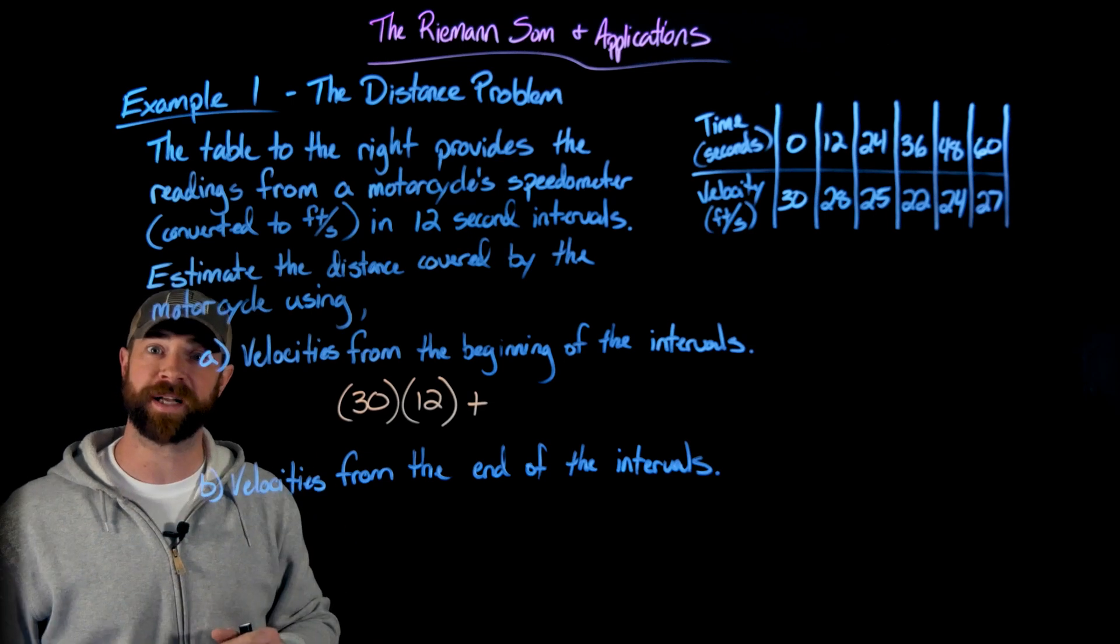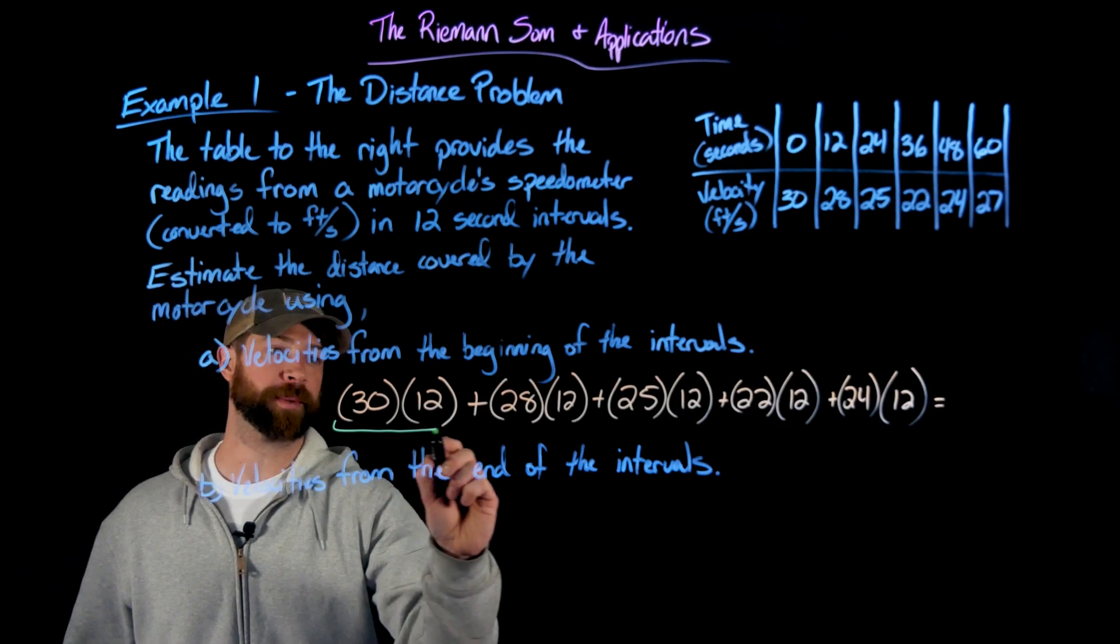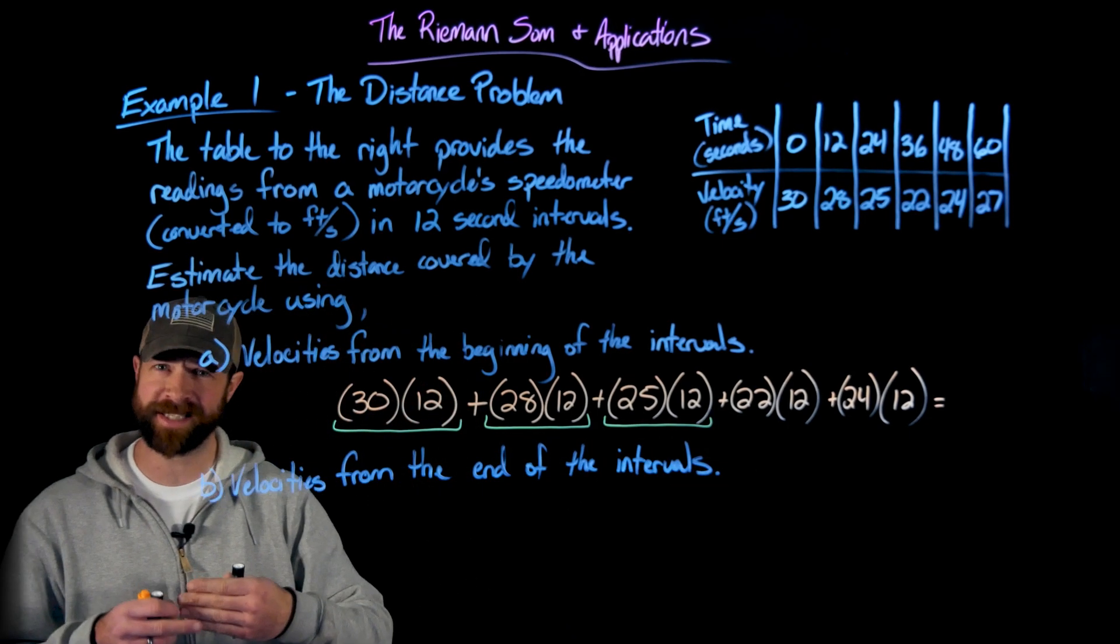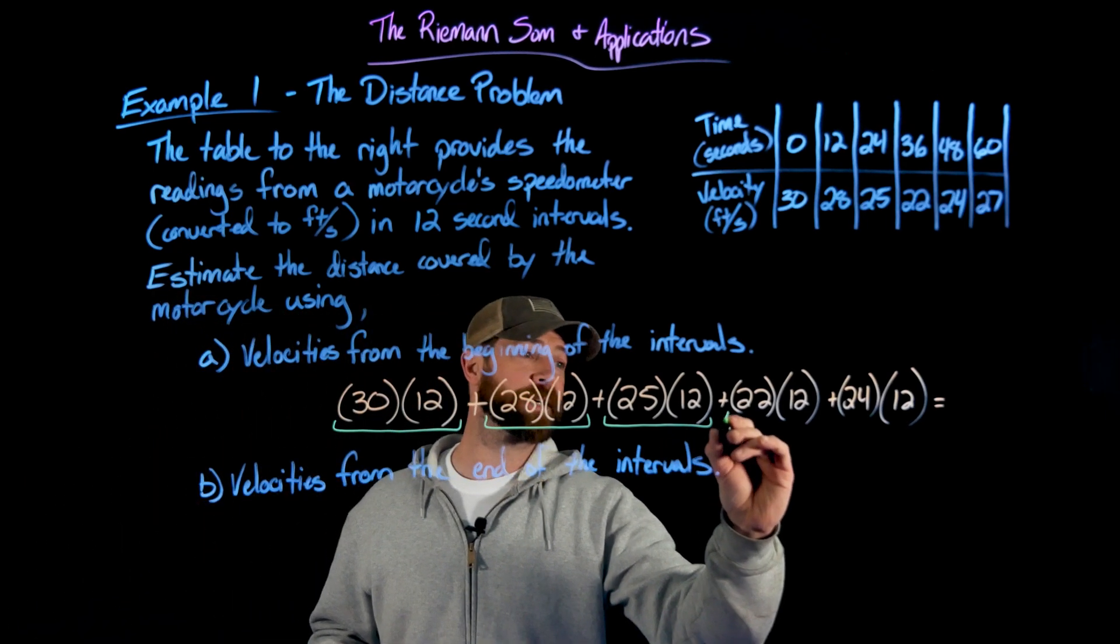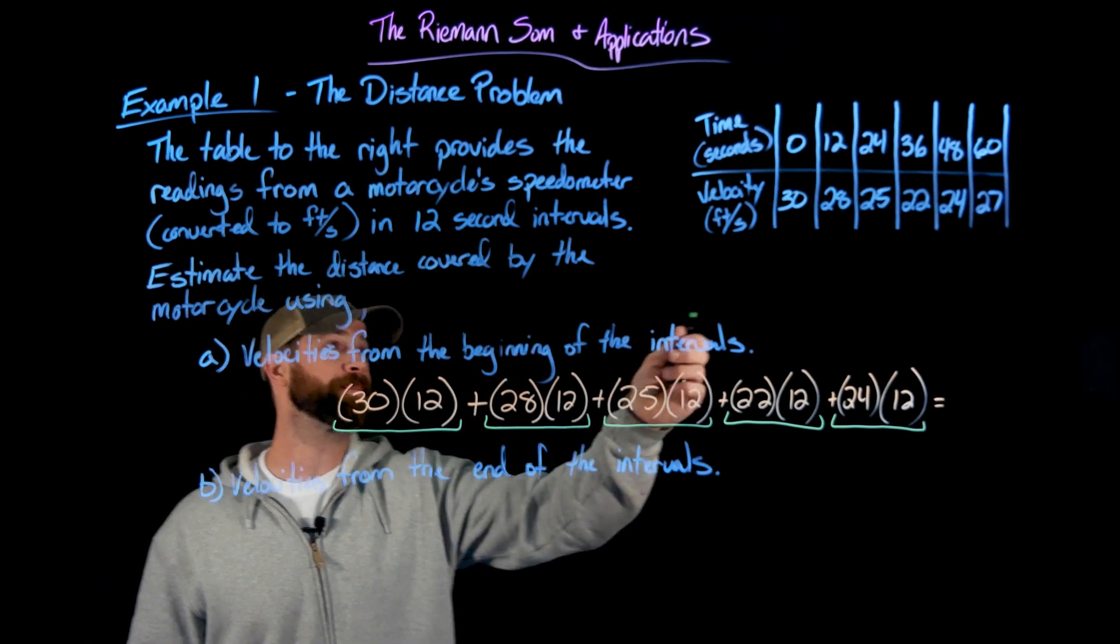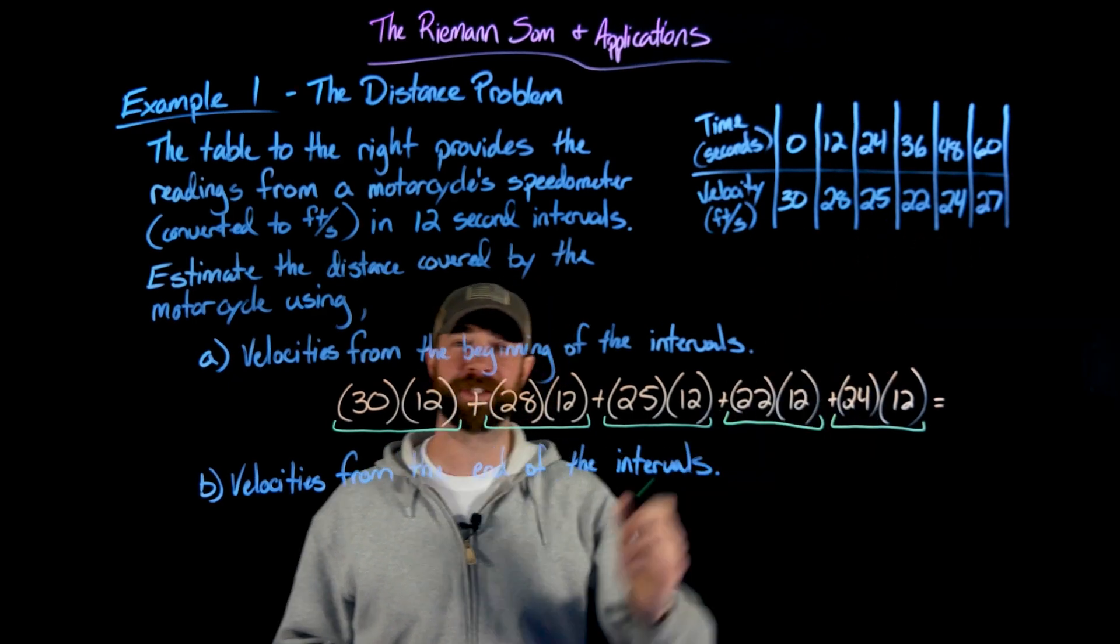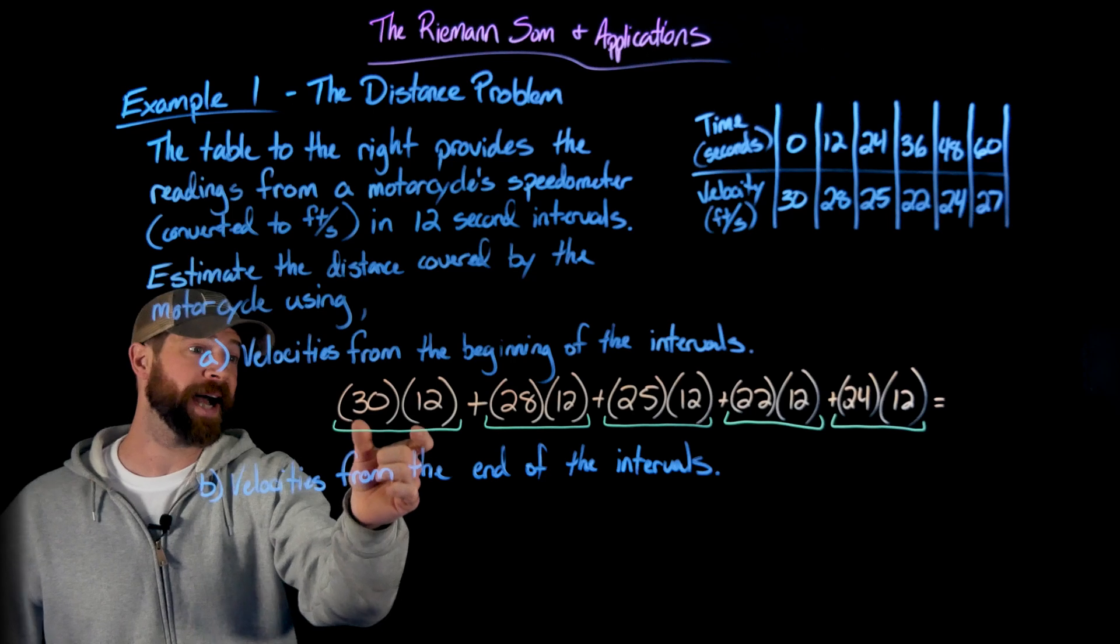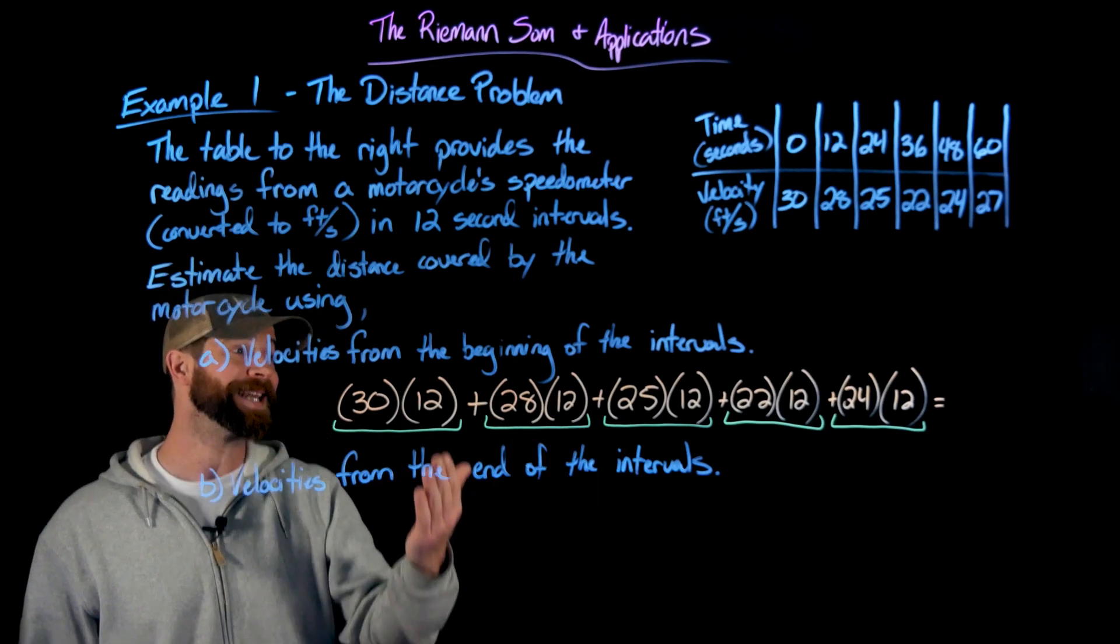Let me write this out and see if we can clarify what's going on. So what I have here in each of these terms is the velocity being multiplied by the amount of time, right? This is the formula, distance equals rate times time. The rate for how long each of these intervals is 12 seconds. We have five intervals. If you look up there, we have six pieces of information we've been given, but they cover just five different 12 second intervals to cover that 60 seconds. So here we have the individual distances traveled for each interval. Again, using the beginning of the intervals.